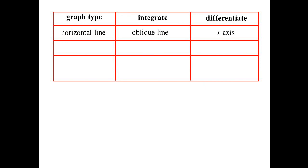Regarding the types of graphs: if the graph is a horizontal line and we integrate it, we get an oblique line — integrating a constant gives a constant times x. Differentiating gives the axis. If the original graph is an oblique line, we get a parabola when we integrate (integrating something times x gives something times x squared), and differentiating gives a horizontal line.